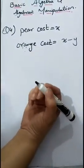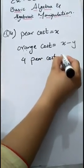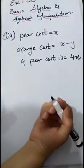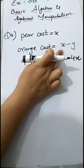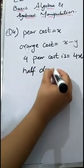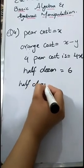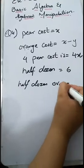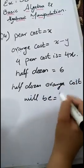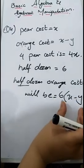Now we have to find the total cost of 4 pears. As 1 pear costs x, 4 pairs cost is 4x. And half a dozen oranges — half a dozen means 6. As this is the cost of 1 orange, when we want to find the cost of half a dozen, half a dozen means 6, so half dozen orange cost will be equal to 6, and 1 orange cost is x minus y. So it will be the cost of 6 oranges: 6(x minus y).